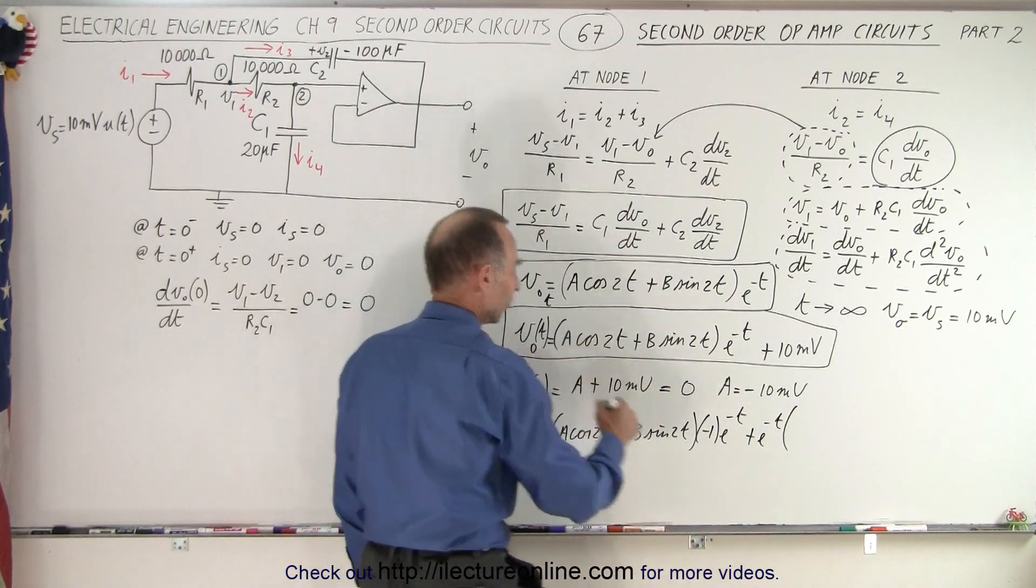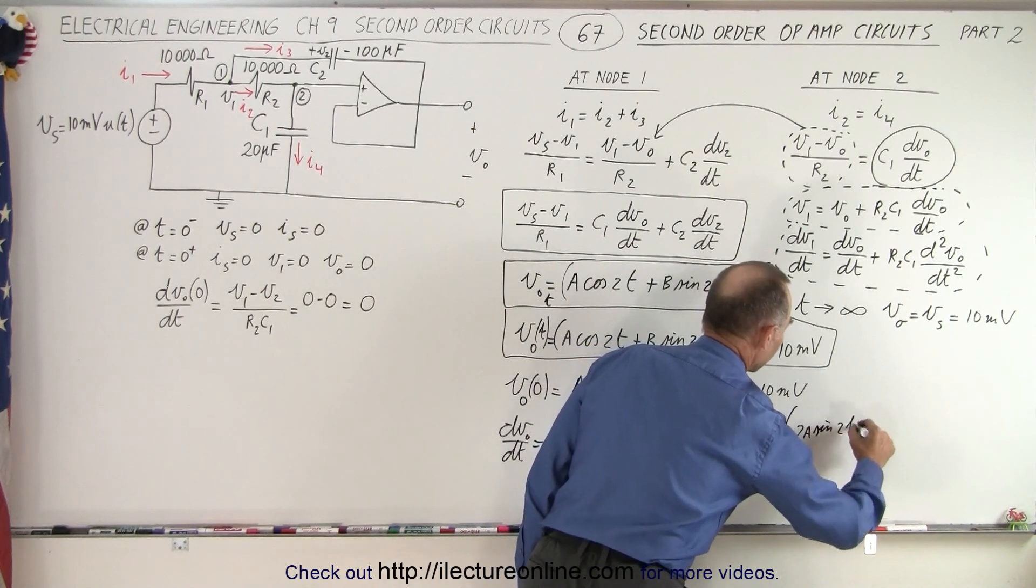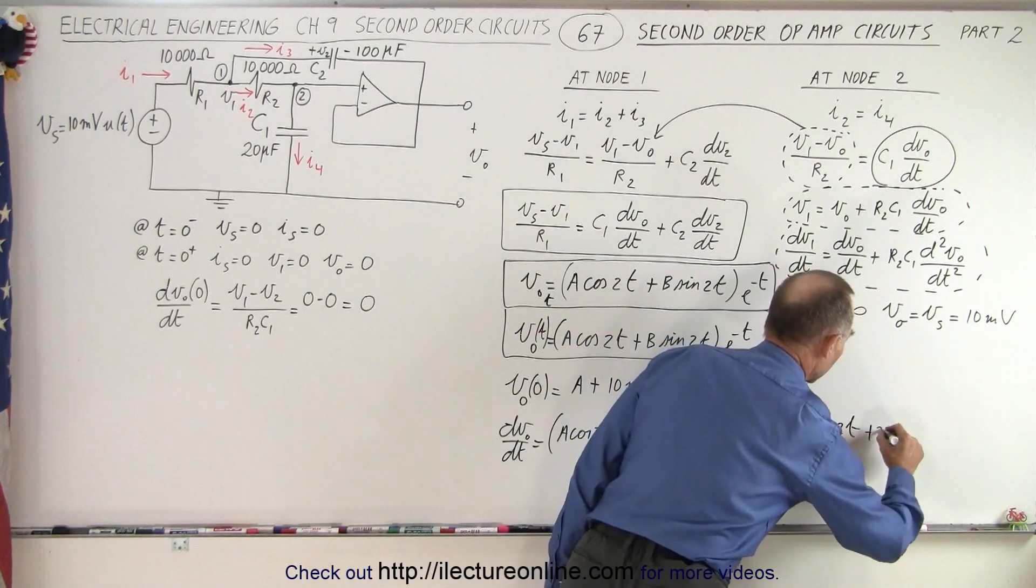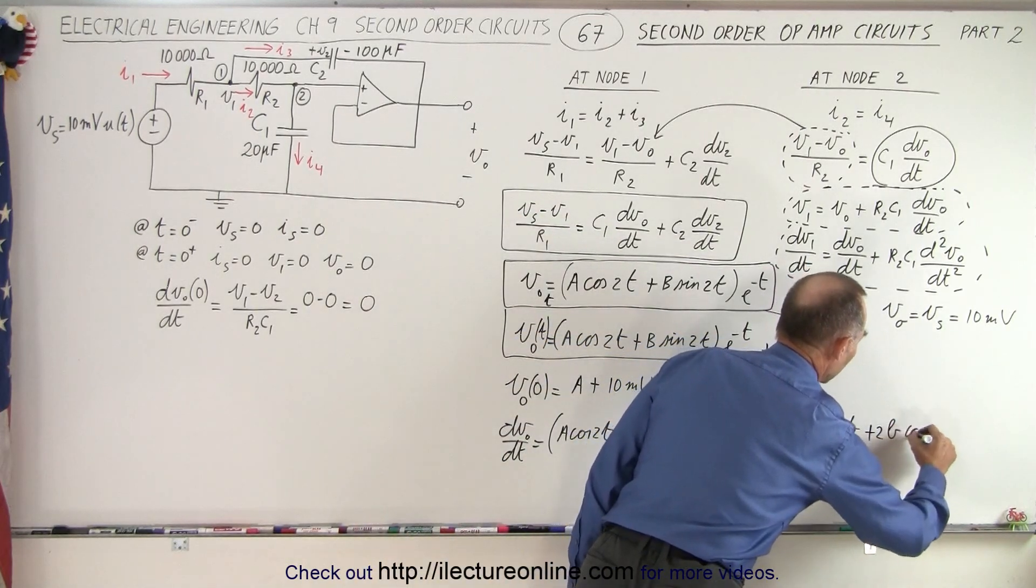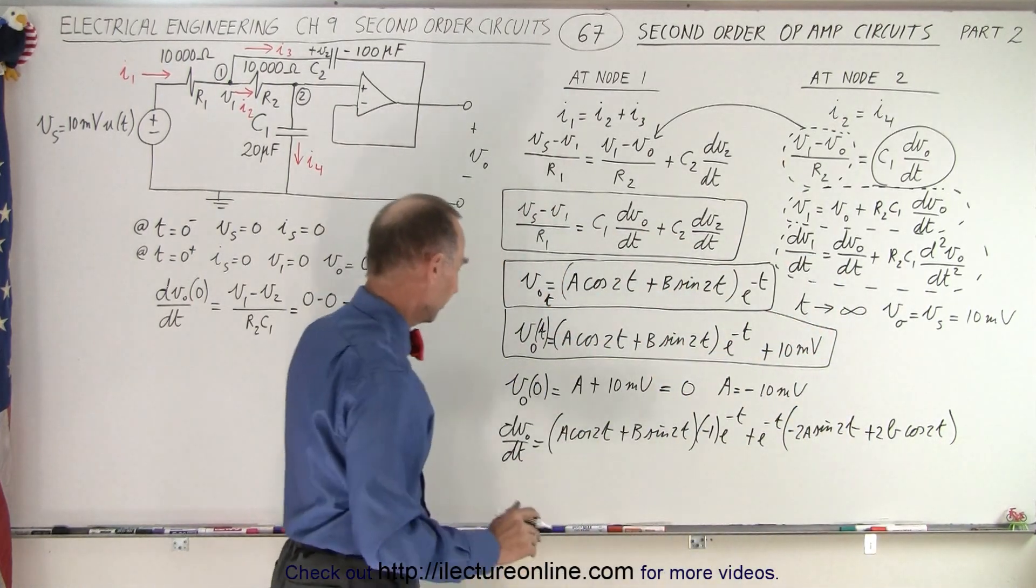Derivative of the cosine is a negative sine, so it's minus 2A times the sine of 2t, and the derivative of the sine is the cosine, so we get plus 2B times the cosine of 2t, and notice that the derivative of the constant goes to 0.